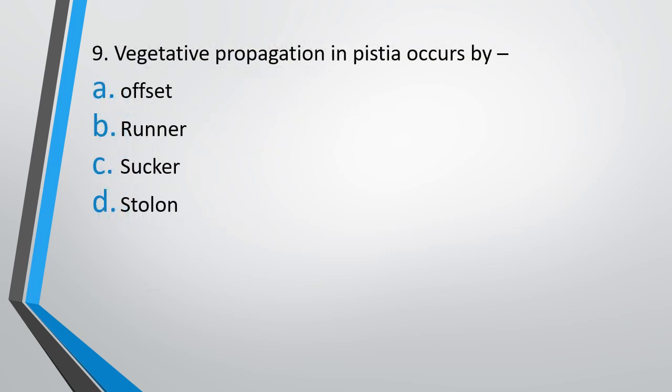Question number 9. Vegetative propagation in Pistia occurs by: offset, runner, sucker, or stolon? The correct answer is option A, offset.